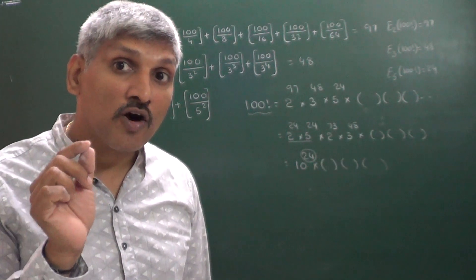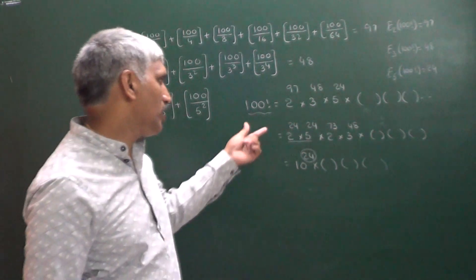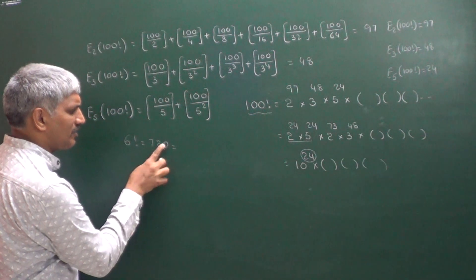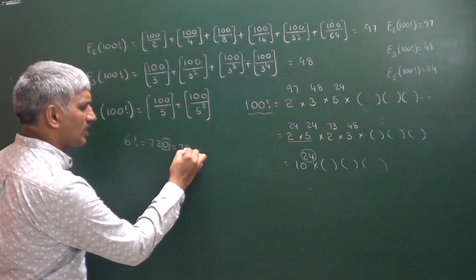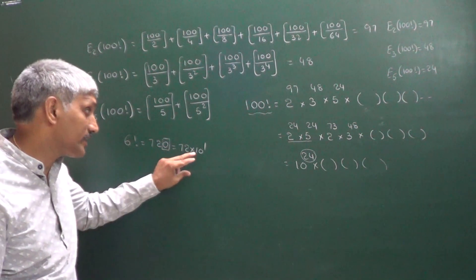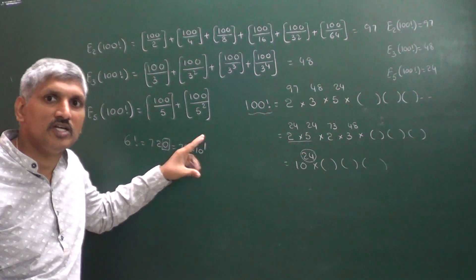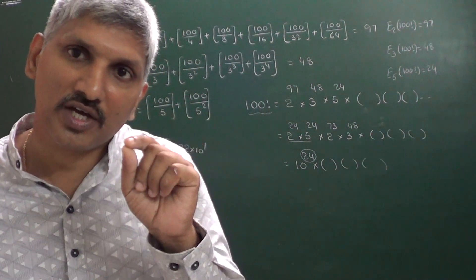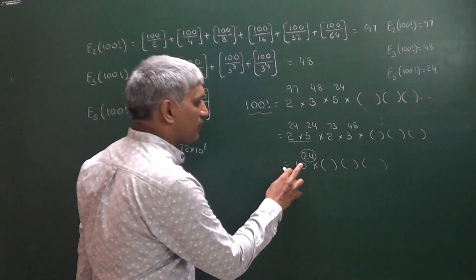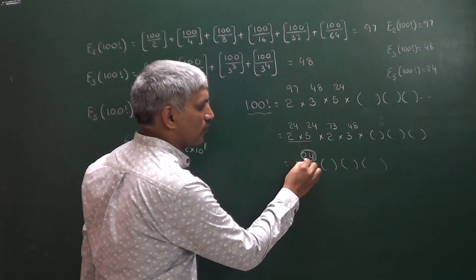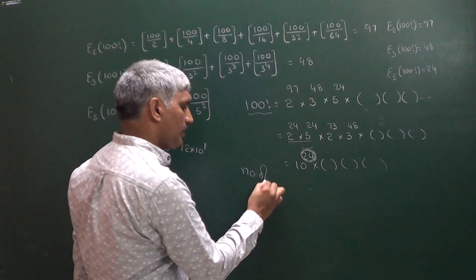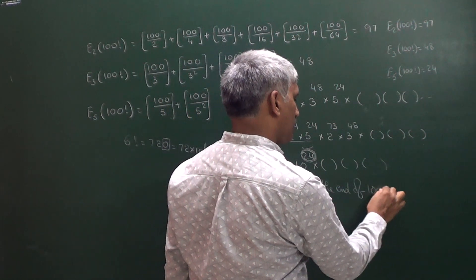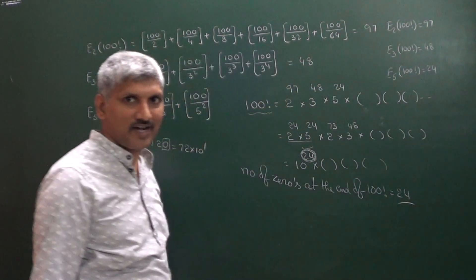This also answers the question: what is the number of trailing zeros at the end of 100 factorial? For example, 6 factorial is 720, which has one trailing zero — it can be written as 72 × 10¹. The exponent of 10 equals the number of trailing zeros. Since the exponent of 10 in 100 factorial is 24, the number of zeros at the end of 100 factorial is equal to 24.